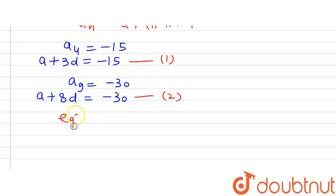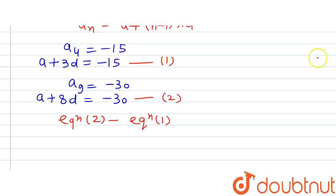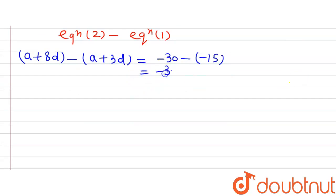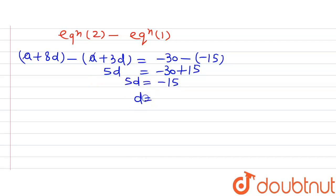Now let us subtract Equation 1 from Equation 2. Equation 2 minus Equation 1 gives us: (A + 8D) − (A + 3D) = −30 − (−15). The A terms cancel out, leaving 5D = −30 + 15 = −15. Therefore D = −3. We have now found the common difference.